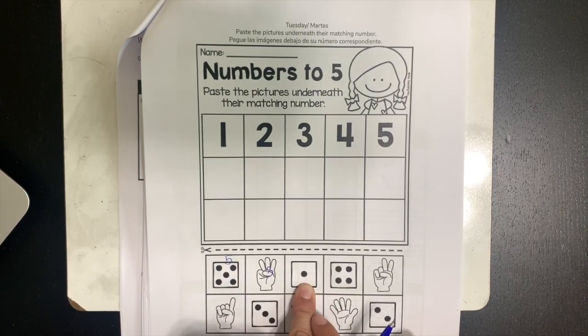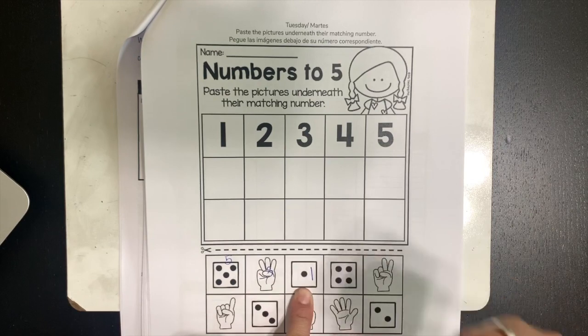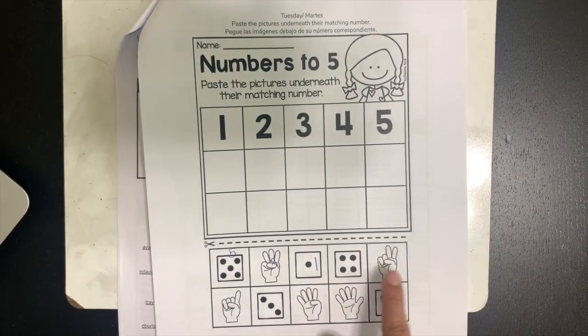This has 1 dot. 1. Write the number 1. Now you do the rest on your own.